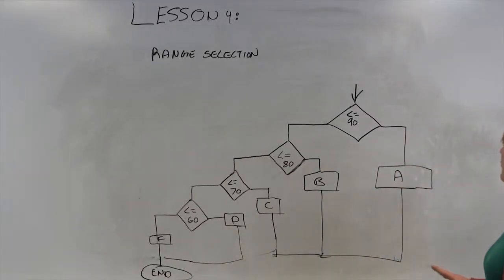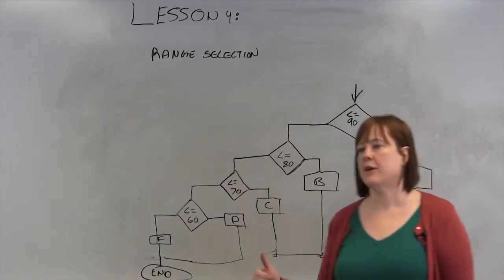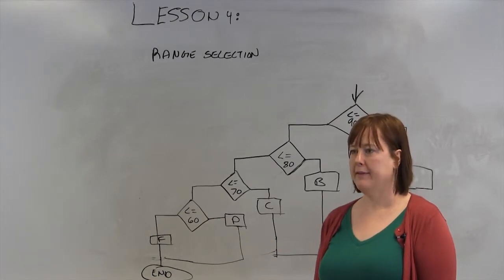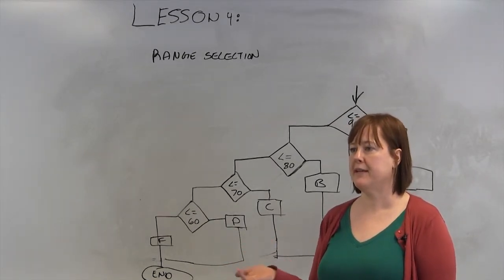Range selection. This is a formula pretty much anybody who's a student has seen. You all know that if you get 90% or higher, it is an A. If it's 80% to 89 point something percent, it is a B.